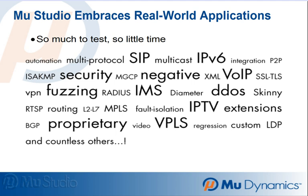Mu's solution automates a systematic and repeatable process which quickly identifies subtle flaws within IP-based services, applications, and underlying networks.